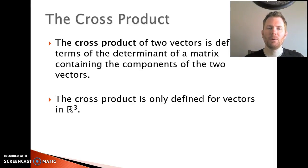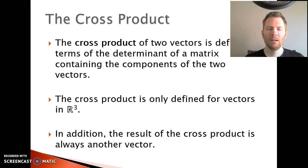First of all, it's important to know the cross product is only defined for vectors in R3. So you cannot find the cross product of two R2 vectors or R4 vectors. The result of the cross product is another vector. So the dot product of two vectors gave us a scalar, but the cross product of two vectors gives us another vector.